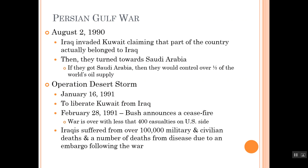In January 1991, we will help liberate Kuwait from Iraq. This will be a coalition operation — we'll be doing it with the British, the French, the Saudis, the Egyptians, and ourselves. Similar to the Korean War with NATO forces, this is a UN-sanctioned coalition. Within a month, Bush will announce a ceasefire. The war will be over with less than 400 casualties on the U.S. side. Iraqis suffered over 100,000 military and civilian deaths, plus deaths from disease due to the embargo that followed the war.